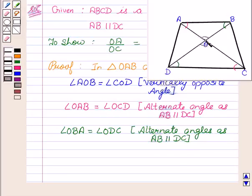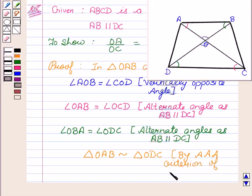We can say that triangle OAB is similar to triangle ODC by AAA criterion of similarity. Therefore, triangle OAB is similar to triangle ODC by AAA criterion of similarity.